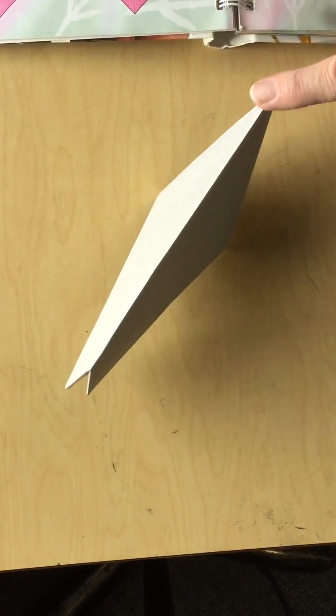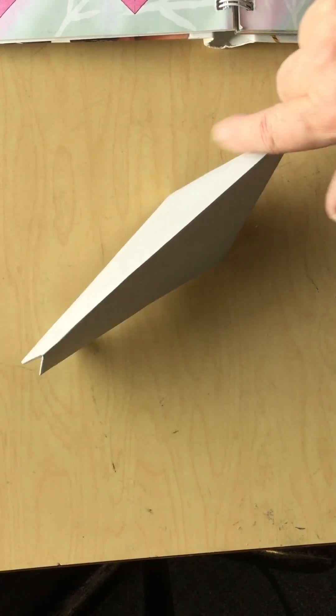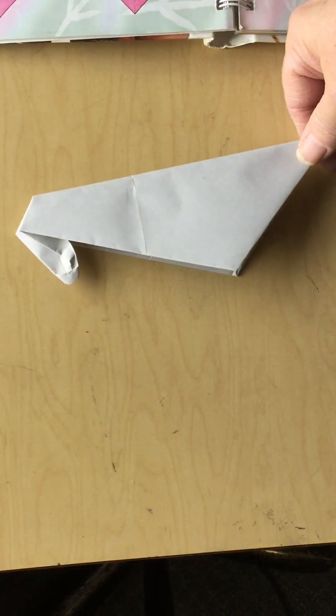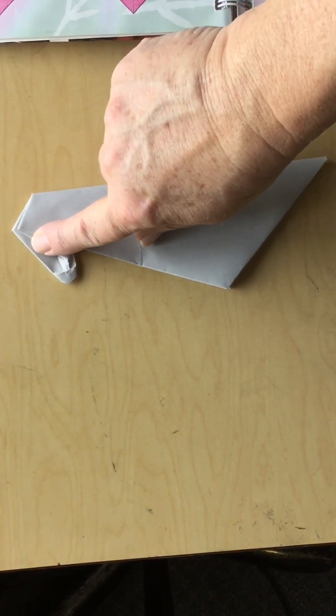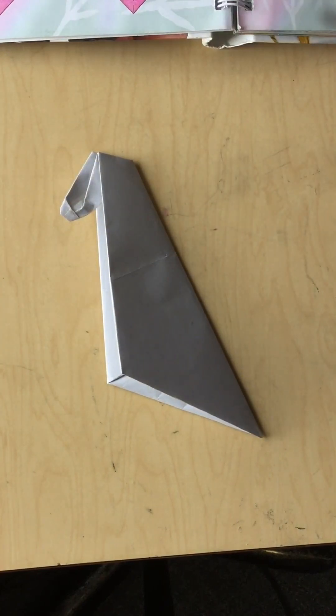And let me scoot it over. And you'll be able to tip it like this. And the side of it looks like this. And you'll be able to put your eyes on there. And that is your pecking bird.